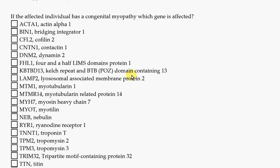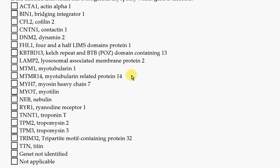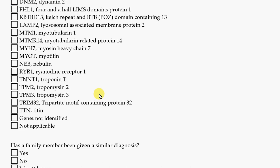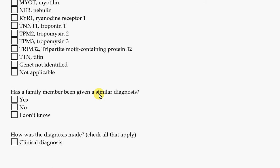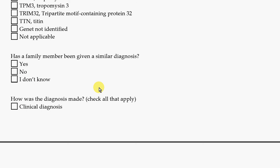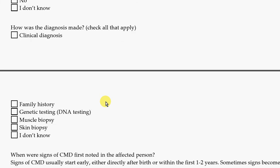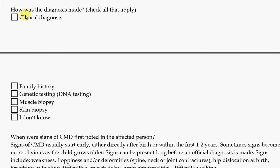If the affected person has a Congenital Myopathy, you want to select which gene it is if you know. If the gene has not been found out yet, no problem — just check here. Also, has a family member been given a similar diagnosis? Here we want to know how the doctor made the diagnosis.